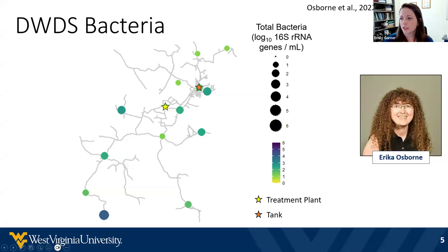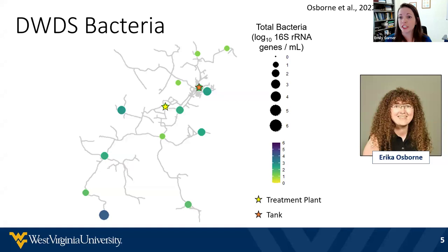Over the last couple of years, I've had master's students who studied bacteria out in the drinking water distribution system. Here I'm showing monitoring data from one small system in West Virginia. Really everywhere we looked throughout this system, we detected levels of bacteria, sometimes as high as about 10,000 copies of bacteria genes per milliliter of water — genes that we're looking for as indicators of live bacteria. So we can see quite a lot of bacteria in these systems. This was work led by my student Erica.